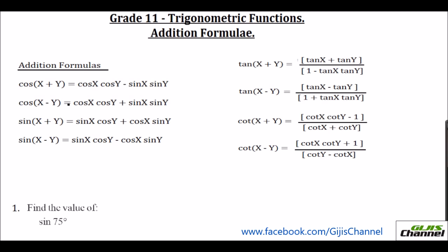The first one is cos(x + y). Cos(x + y) is equal to cos x cos y minus sin x sin y. And cos(x − y) is the same — only the sign differs. So here it is cos x cos y plus sin x sin y. Just notice that when it is cos(x + y), you have a negative sign, and when it is cos(x − y), this becomes positive. You can see that cos terms come together and sin terms come together in the cosine formula.